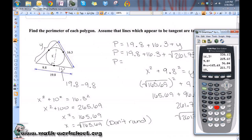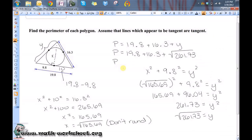So, 19.8 plus 16.3 plus the square root of 261.73, 52.3. So, the perimeter is approximately equal to 52.3.